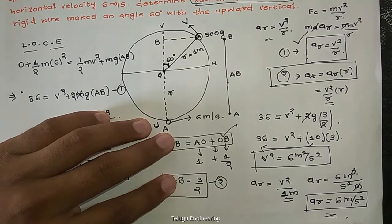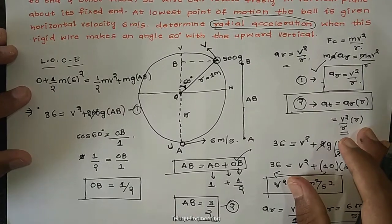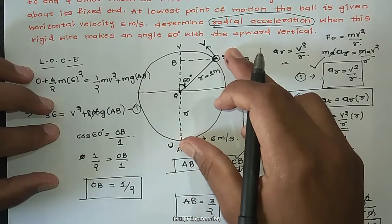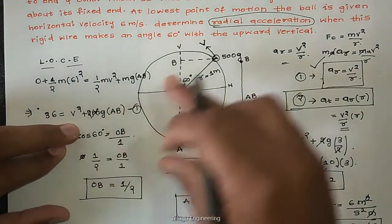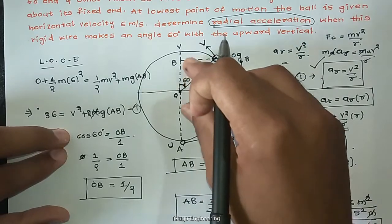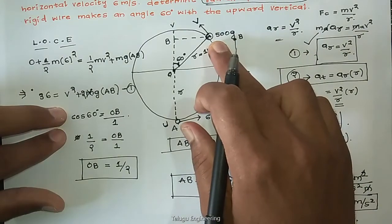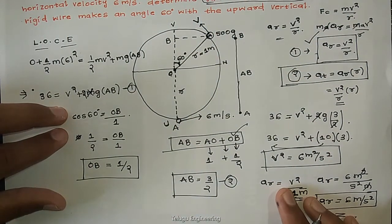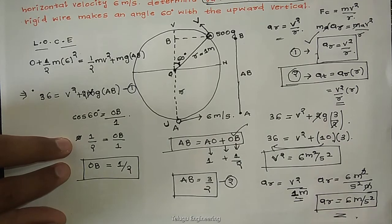So the radial acceleration is 6 meters per second squared. To summarize what we did: we applied the law of conservation of energy, found the height AB using the 60-degree angle and cos theta, substituted to get v squared equals 6, and then used the radial acceleration formula ar equals v squared by r to get the final answer of 6 meters per second squared.